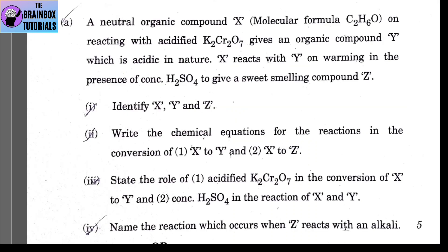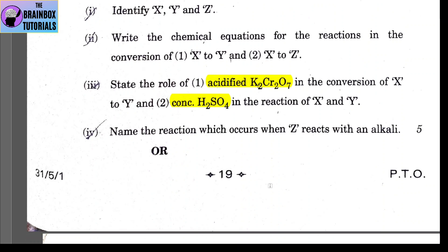Number 3: state the role of acidified potassium dichromate in the conversion of X to Y — it acts as an oxidizing agent. Concentrated H₂SO₄ in the reaction of X and Y acts as a dehydrating agent. Number 4: name the reaction that occurs when Z reacts with an alkali. When ethyl ethanoate reacts with an alkali, the process is known as saponification.